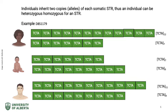On the slide, we have an example of the inheritance of an STR using D8S1179. The mother is heterozygous — she has one allele with 12 TCTA repeats and another with 7 repeats. The father is also heterozygous, with one allele of 11 TCTA repeats and another with 9 repeats. Their child has inherited the maternal allele with 7 repeats and the paternal allele with 9 repeats.